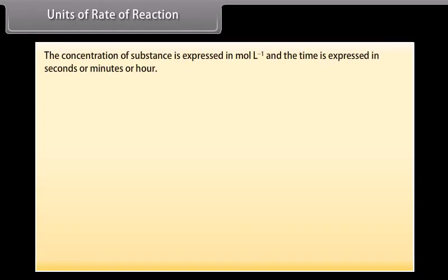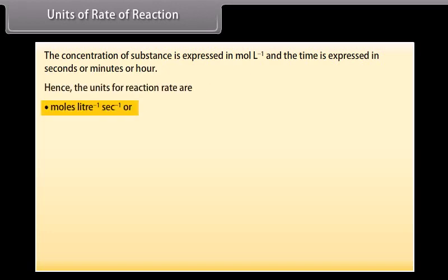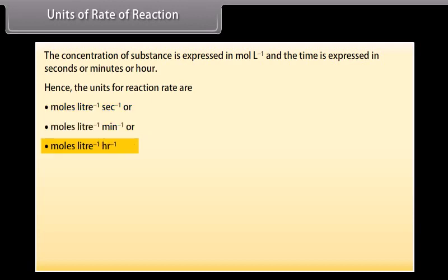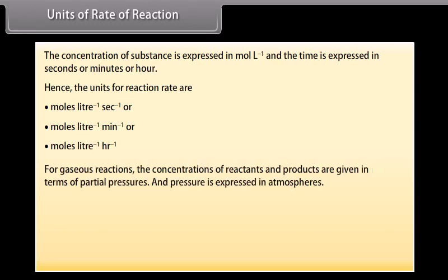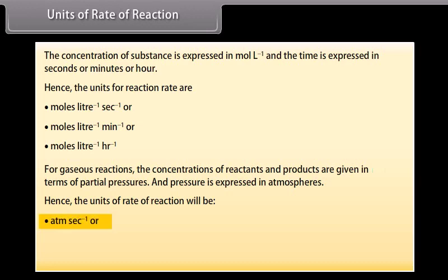The concentration of a substance is expressed in mol per litre and the time is expressed in seconds, minutes, or hours. Hence, the units for reaction rate are mol per litre per second, mol per litre per minute, or mol per litre per hour. For gaseous reactions, the concentrations of reactants and products are given in terms of partial pressures, and pressure is expressed in atmospheres. Hence, the units of rate of reaction will be atm per second, atm per minute, or atm per hour.